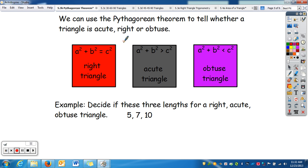We can also use the Pythagorean theorem to tell whether a triangle is acute, right, or obtuse. Well, the Pythagorean theorem is only true to be equal in a right triangle. So, if a squared plus b squared does equal c squared, then it is a right triangle.